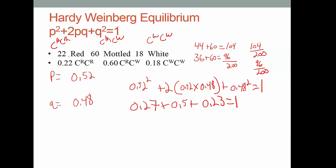CR CR is 0.22. Compare that to this number. 0.22 is not equal to 0.27, right? 0.6 is what we had for the mottled organisms. Let's compare that to what we calculated. We calculated it should be at 0.5. And 0.18 is not equal to 0.23. So this is what we should have if the population were not evolving. But what we have seen is that the population has evolved for this gene. It is not in Hardy-Weinberg equilibrium.